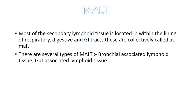MALT is the abbreviation for mucosa-associated lymphoid tissue. Most of the secondary lymphoid tissue is located within the lining of the respiratory, digestive, and GI tracts. These are collectively called MALT. There are several types of MALT: bronchial-associated lymphoid tissue and gut-associated lymphoid tissue.